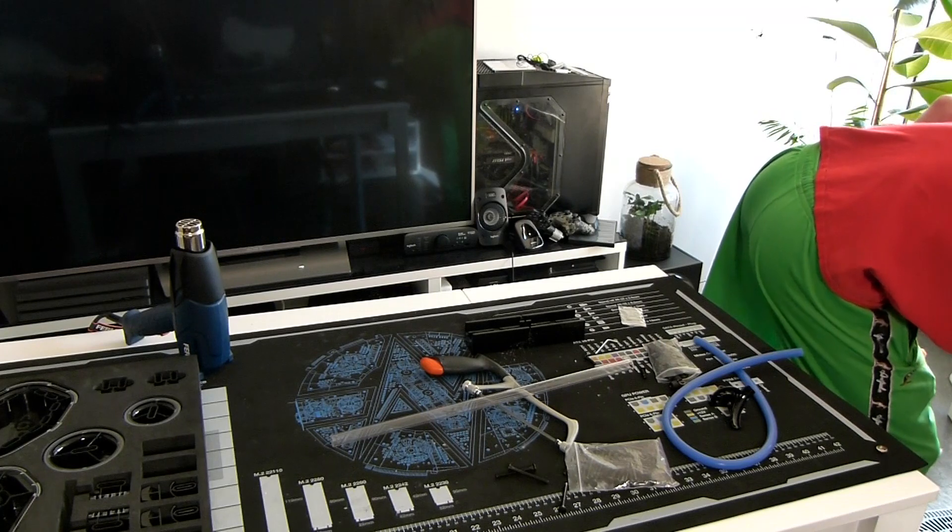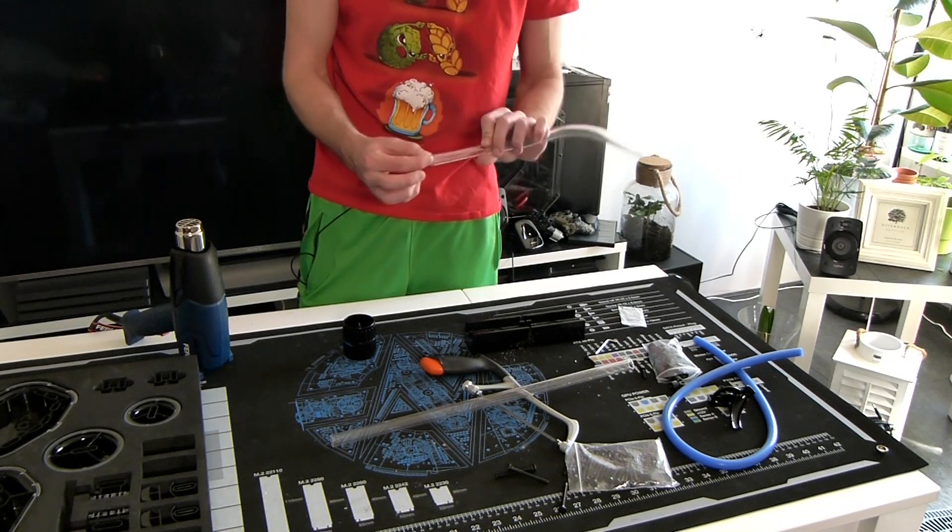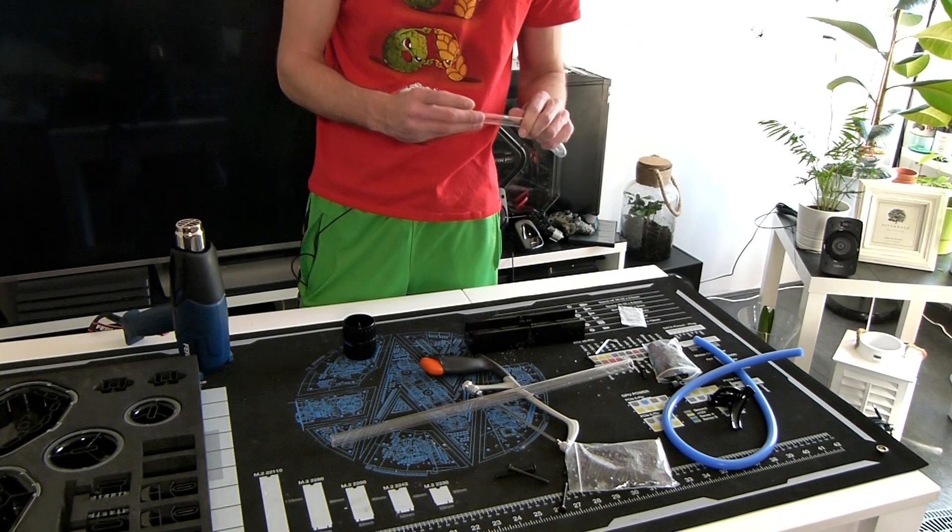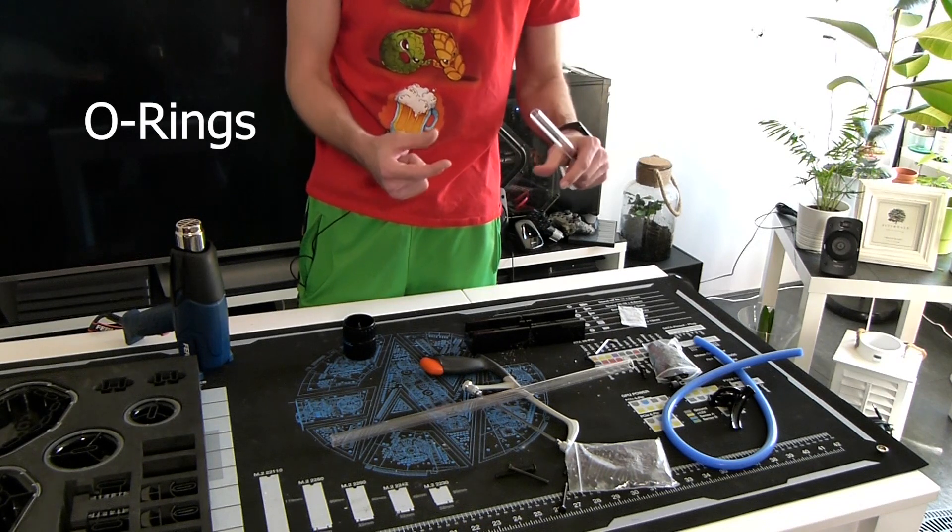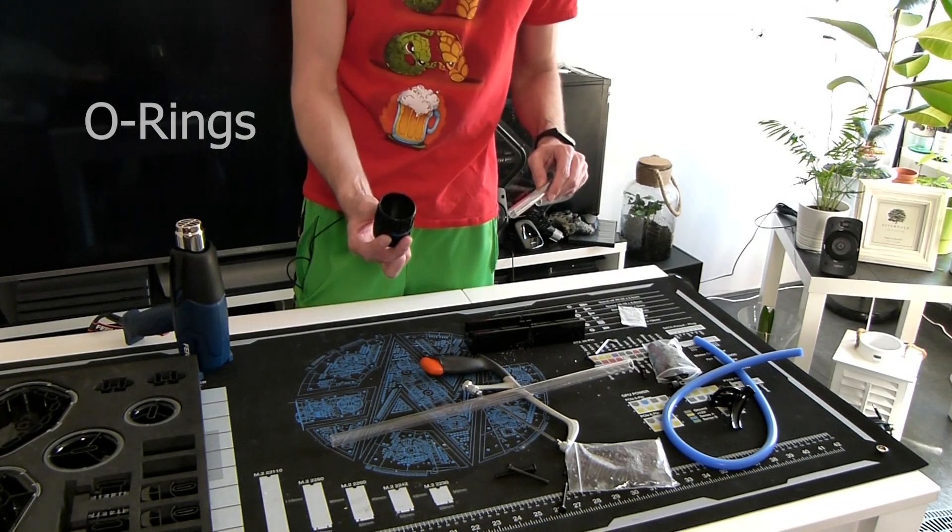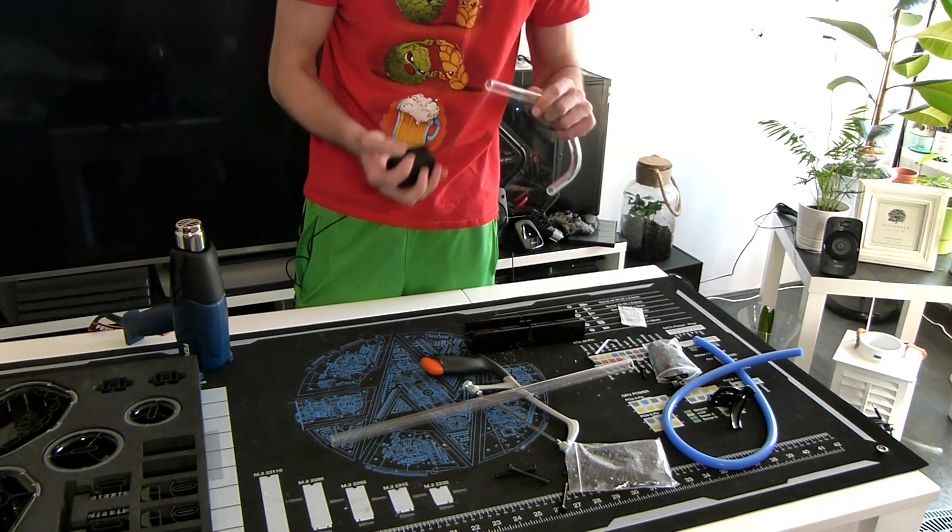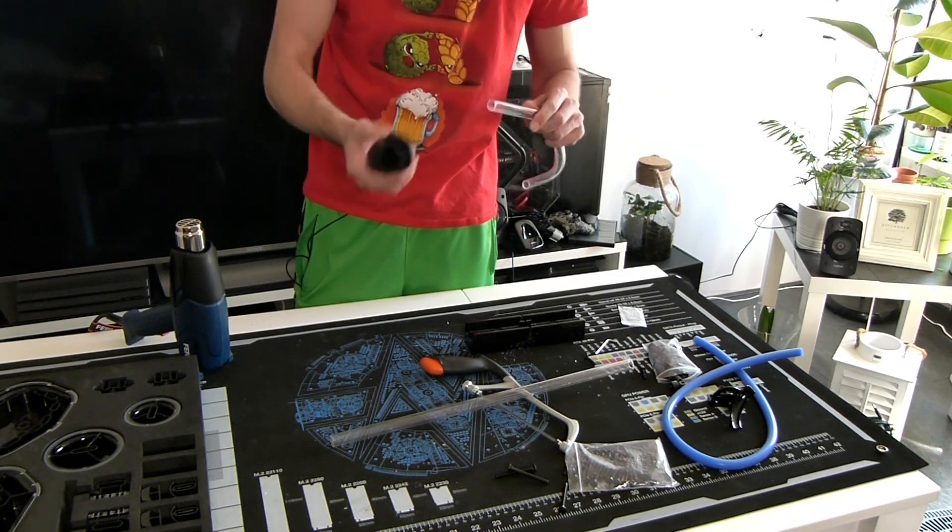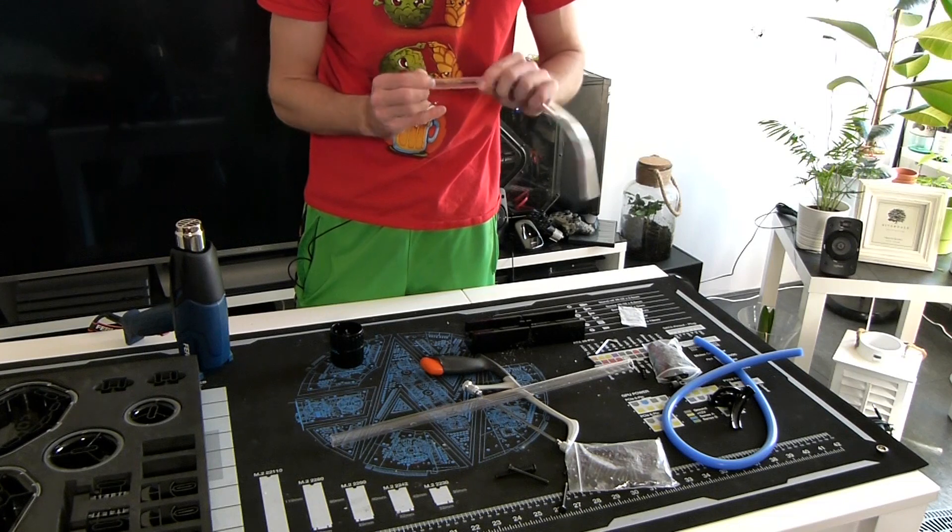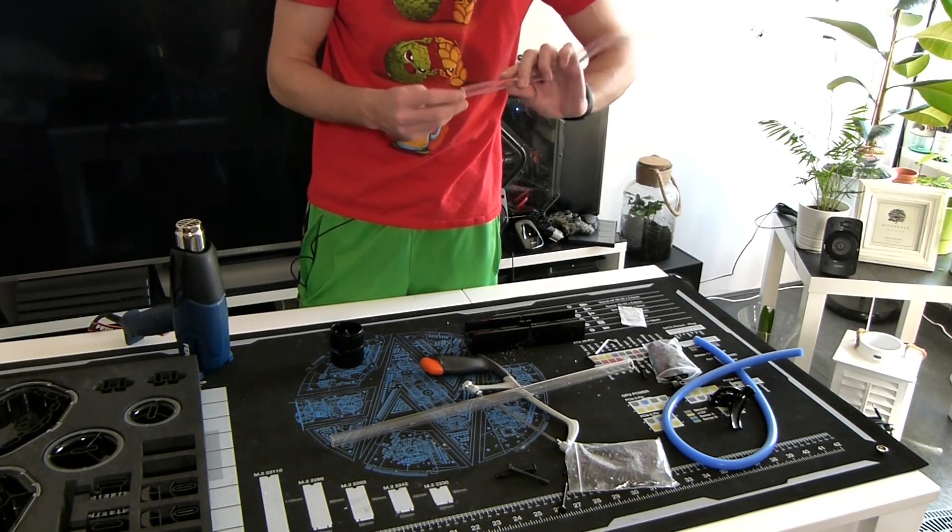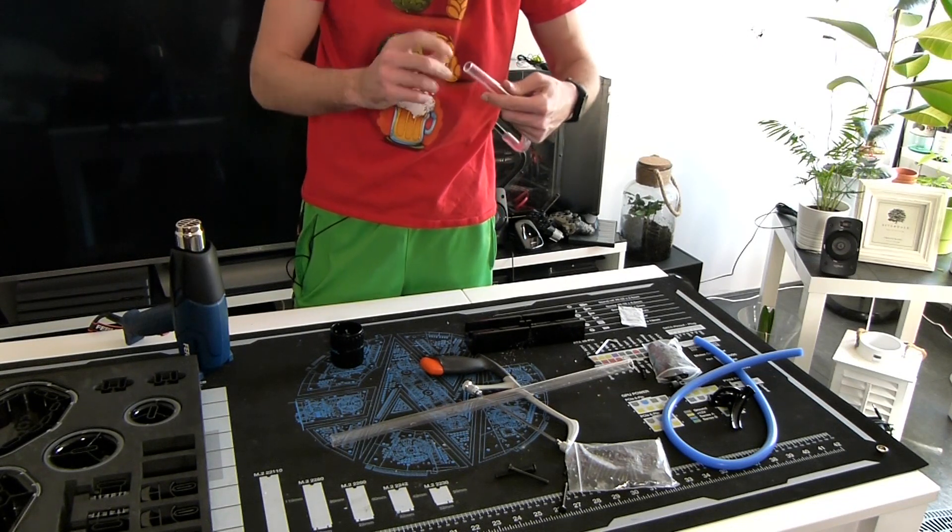Then you have the deburrer in the tool kit. This is to take off the sharp edges that could damage the rubber grommets in your fittings. So what you want to do, you want to grab the outside, take it a couple of times around, and then you take the inside as well. And when that's done, you take the last couple of pieces off.